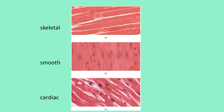Looking at a histology slide, the skeletal muscle on top shows striations — striping patterns — with cells lined up parallel, multiple nuclei, and no branching. The smooth muscle shows no striations whatsoever. The cardiac muscle shows branching, and if enlarged you can see intercalated discs — lines that stretch across the width of the cell.